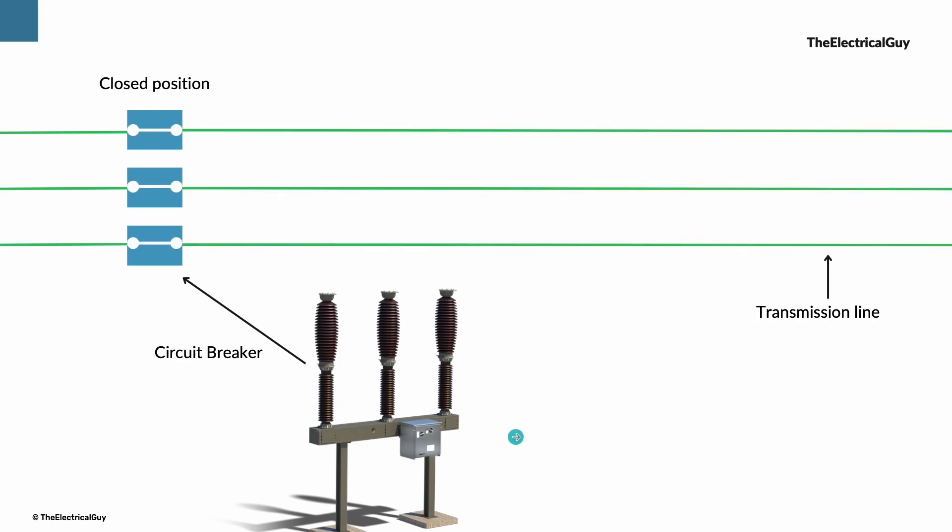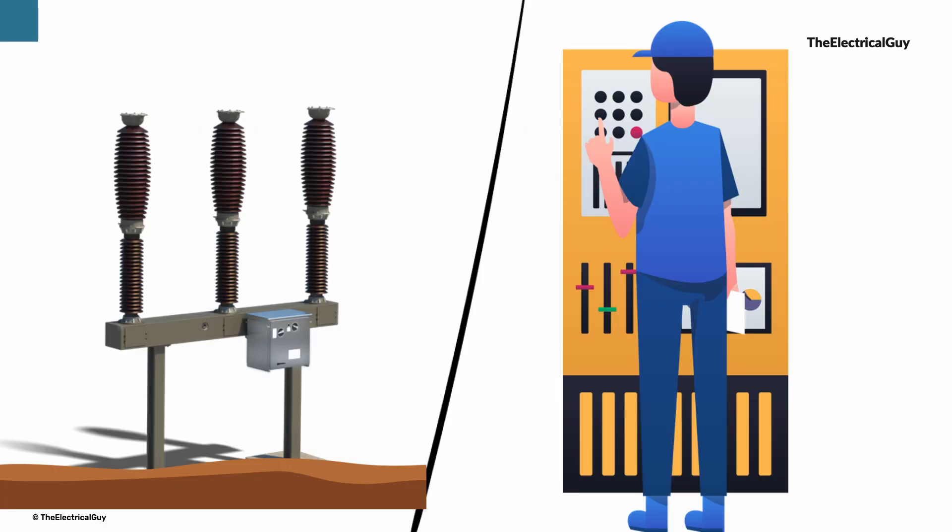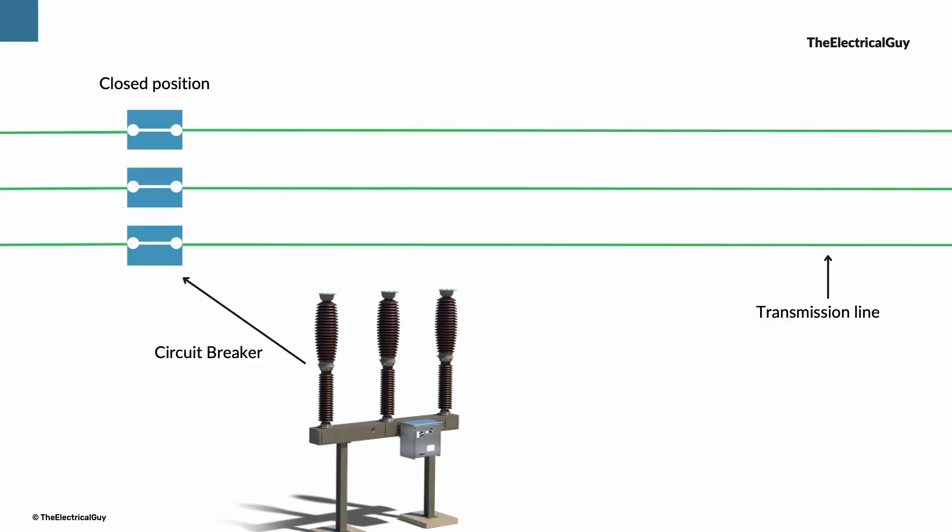In the early days, this reclosing of circuit breaker was carried out manually by the operator. It soon became apparent that it would be beneficial if the reclosing action was carried out automatically, which enabled it to be much faster and so possible to assist in maintaining system stability under some fault conditions.